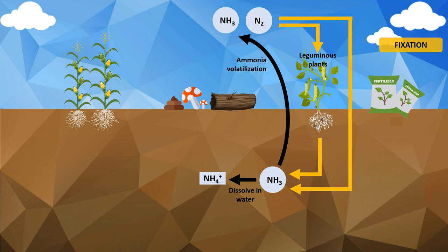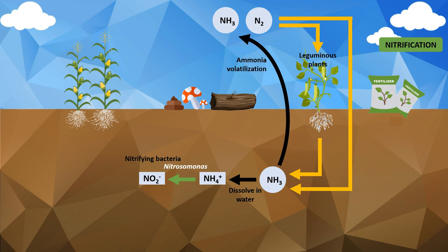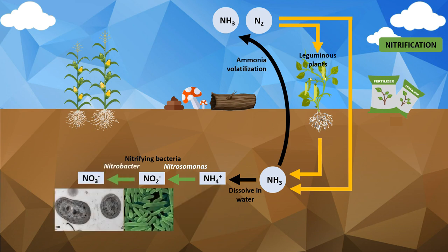The next process in the nitrogen cycle is nitrification by nitrifying bacteria. This is a two-stage process that involves oxidation of the nitrogen in the ammonium ion to produce nitrate ions. Autotrophic soil-living nitrifying bacteria such as Nitrosomonas and Nitrobacter obtain energy by oxidizing ammonia or nitrite ions. In the first stage, Nitrosomonas oxidizes ammonium ions to nitrite ions. In the second stage, Nitrobacter oxidizes nitrite ions to nitrate ions.